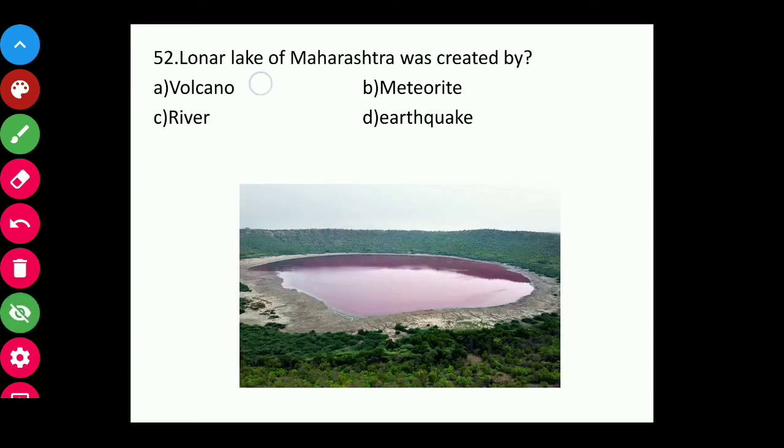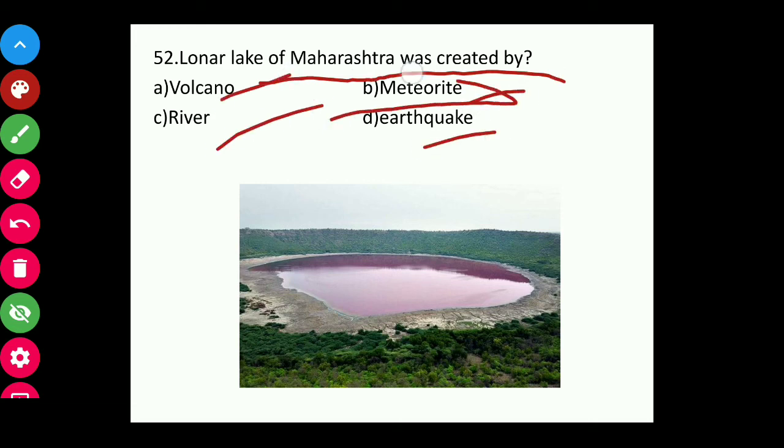Question fifty-two: Lonar Lake of Maharashtra was created by a volcano, meteorite, river, or earthquake? The answer is a meteorite.